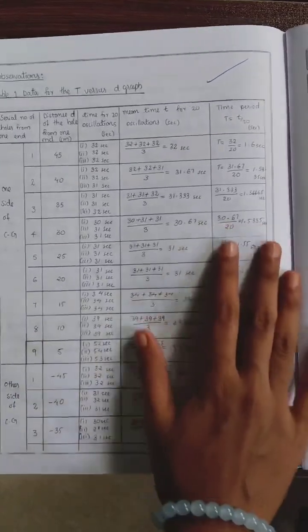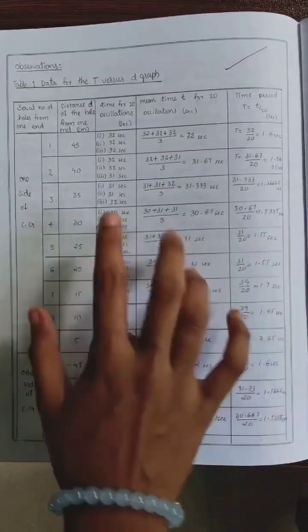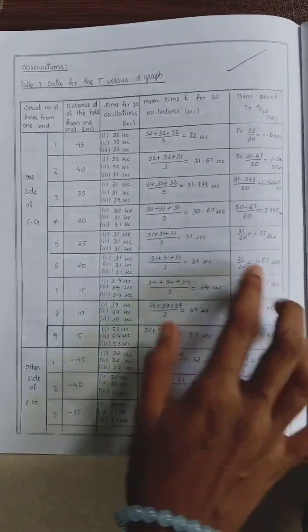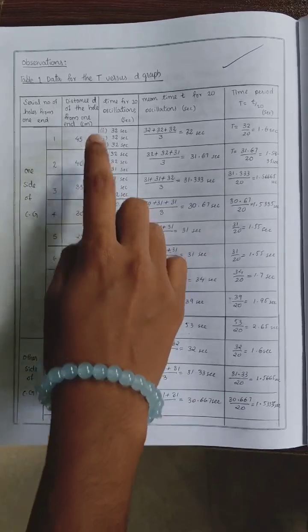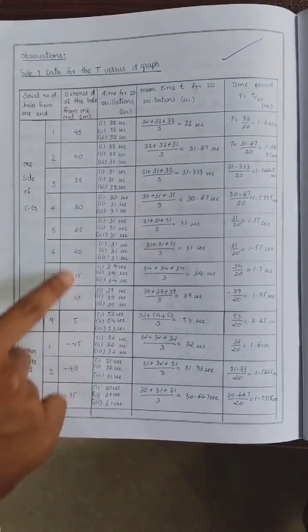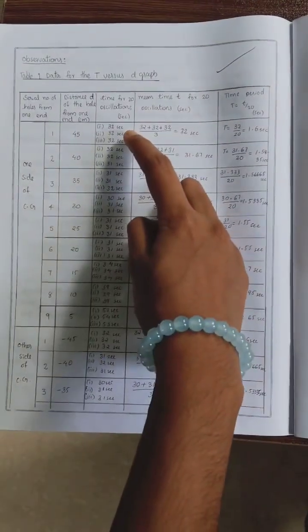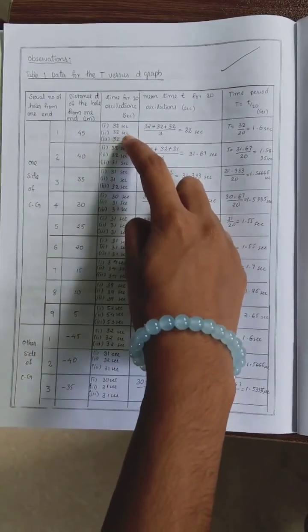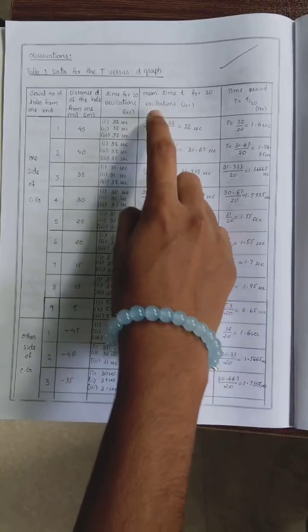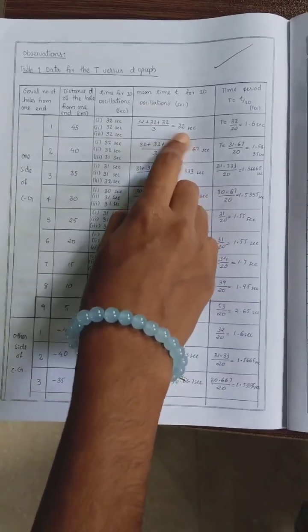So, this is the tabular column for the time period versus D graph. At first, take the distance of hole from one side of center of gravity. These are the distances we got. Then, take 20 oscillations, time for 20 oscillations 3 times. From this, calculate the mean time for 20 oscillations. We got like this.